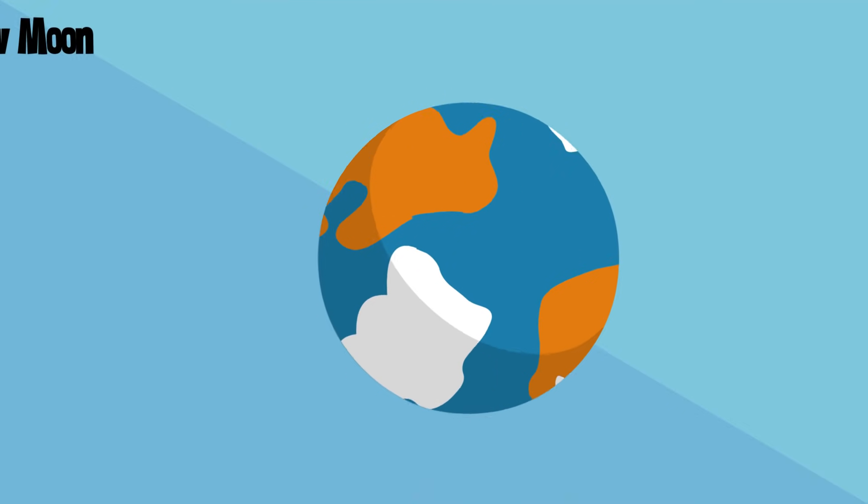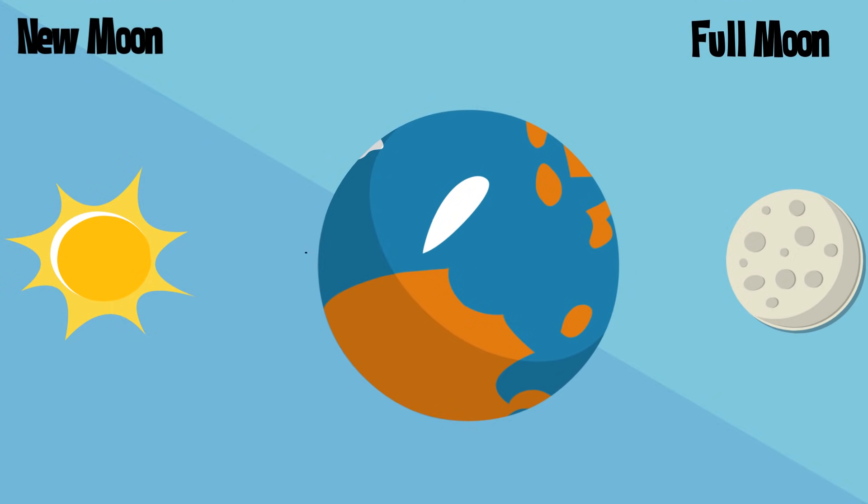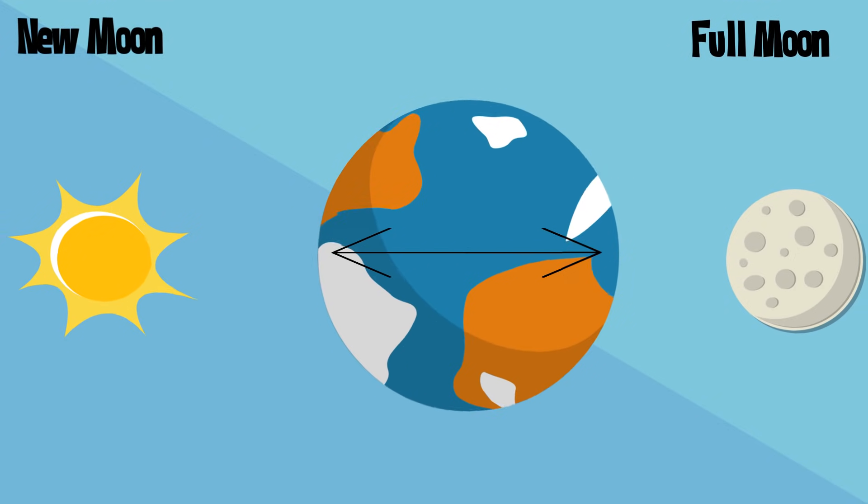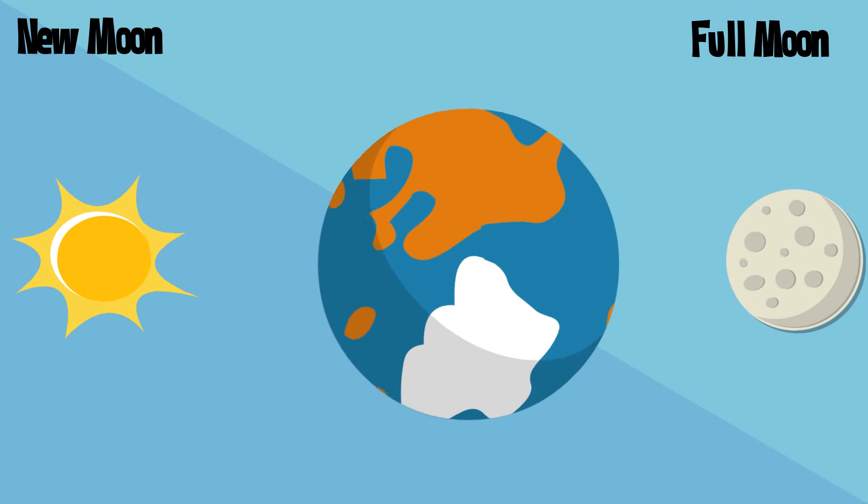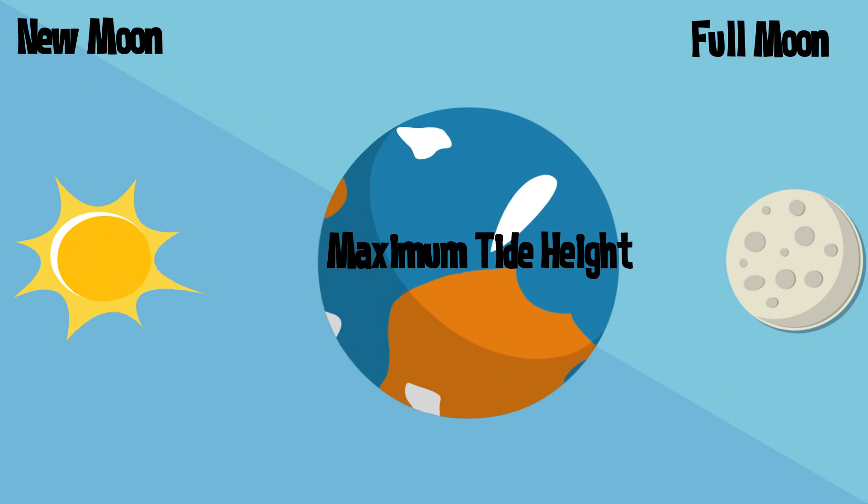Approximately twice a month, around new moon and full moon, when the sun, moon, and earth form a line, the tidal force due to this alignment is at its maximum, and the tide's range is also at its maximum. This is called spring tide.